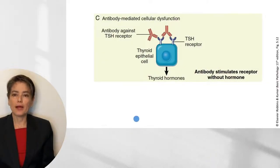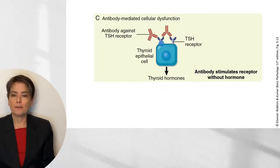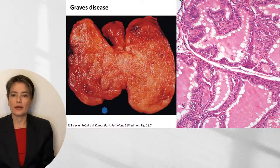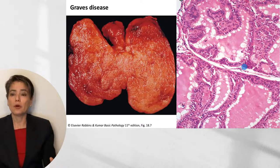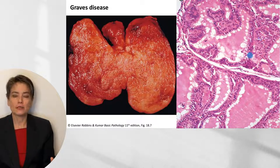The final pathway is antibody-mediated cellular dysfunction. The antibody against the thyroid-stimulating hormone receptor binds to the thyroid epithelial cell and acts as if it were the appropriate ligand, causing elaboration of thyroid hormones. Histologically, this thyroid is very juicy and plump. The follicular epithelium is very revved up, receiving a profound signal to generate thyroid hormone, frantically consuming colloid and causing vacuoles as it generates abundant thyroid hormone.